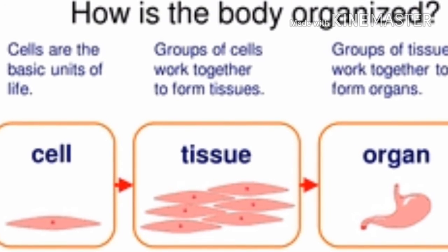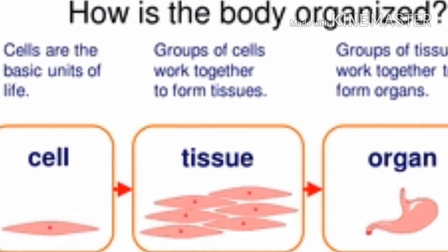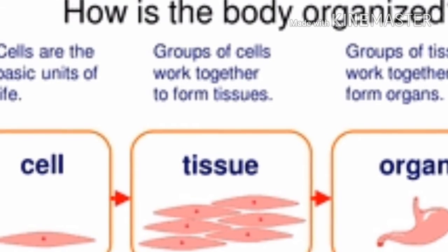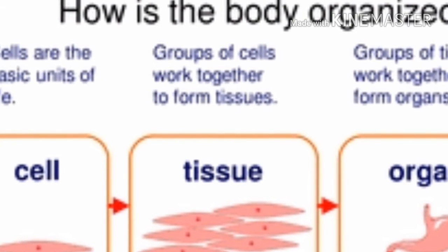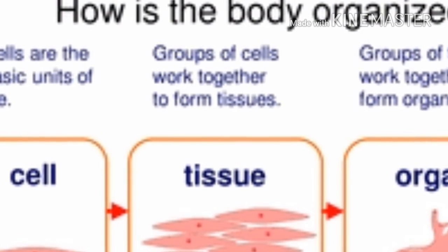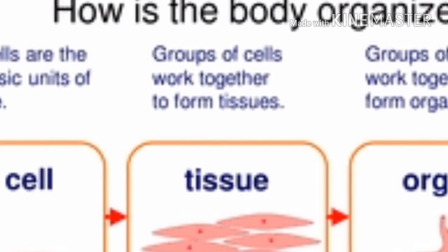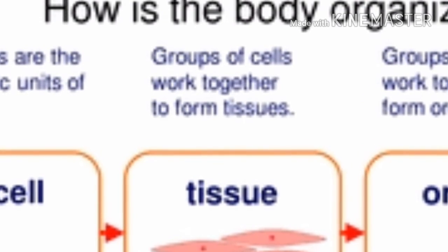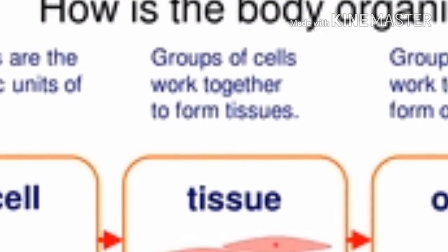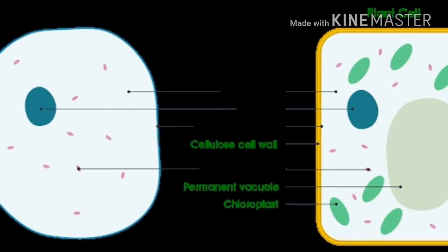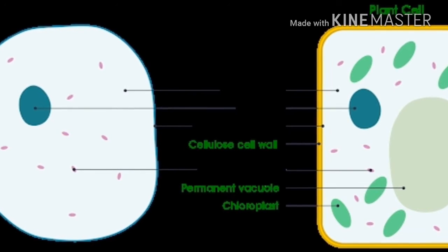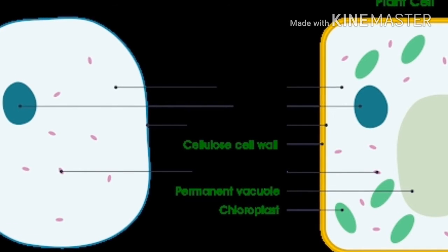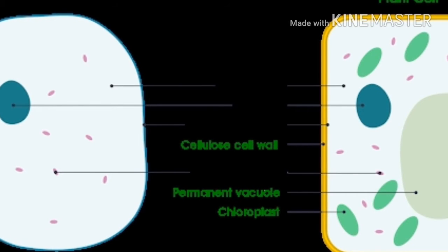Depending on the organism, a body can be organized into cells, organs, and tissues. Cells are the basic units of life. Tissues are groups of cells that work together, while organs are groups of tissues that work together to perform similar functions.